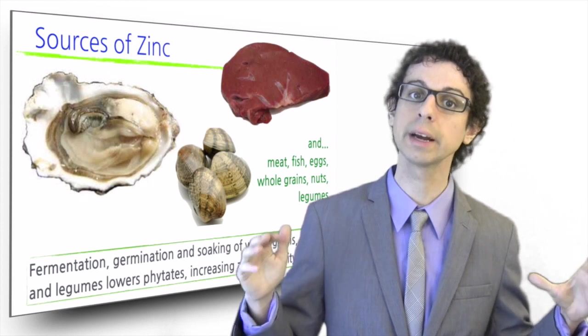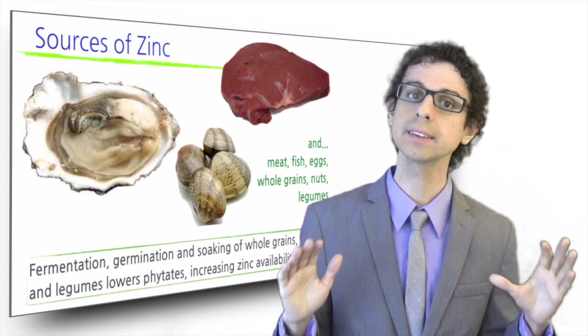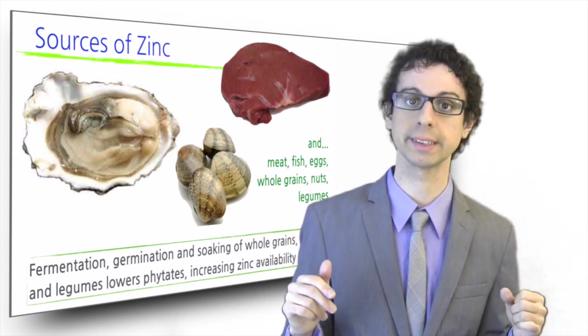Meat, fish, eggs, whole grains, nuts, and legumes all significantly contribute to our zinc requirement. Instead, milk and dairy, refined grains, fruits and vegetables are poor sources of zinc.